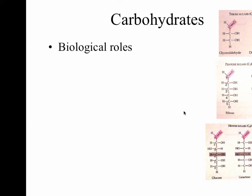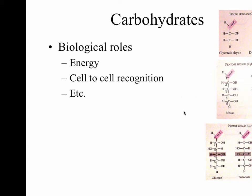Let's first talk about what carbohydrates do in biological organisms. Probably the one people are most familiar with is energy. Carbohydrates are your body's source of immediate energy — when you're running the mile and need a lot of energy really quickly, that's the body's first place it goes. In addition, cells have carbohydrates on the outside used for cell-to-cell recognition. Today we're really focusing on how to recognize a carbohydrate and what are the main properties of that biomolecule.